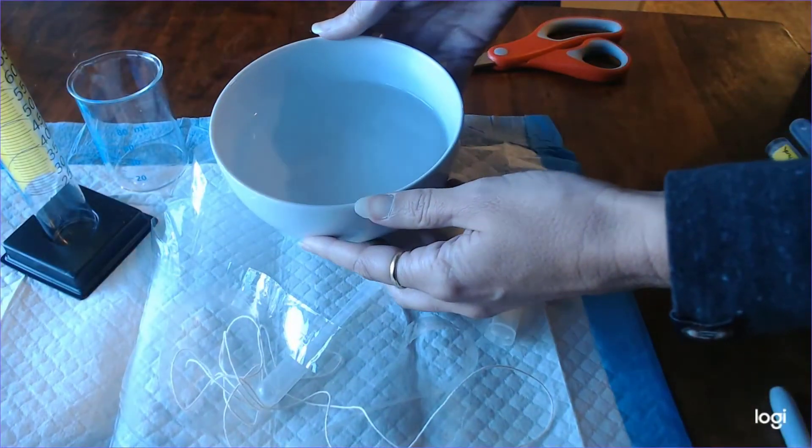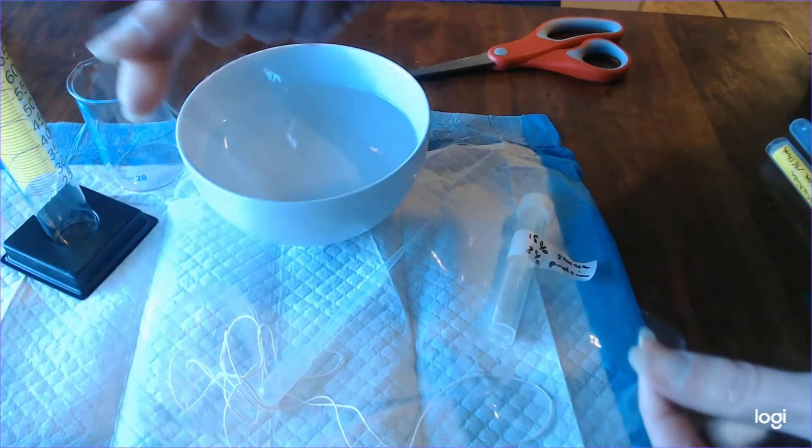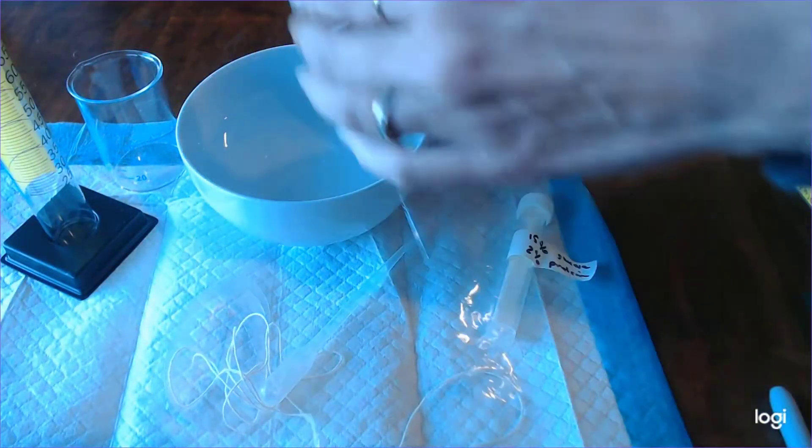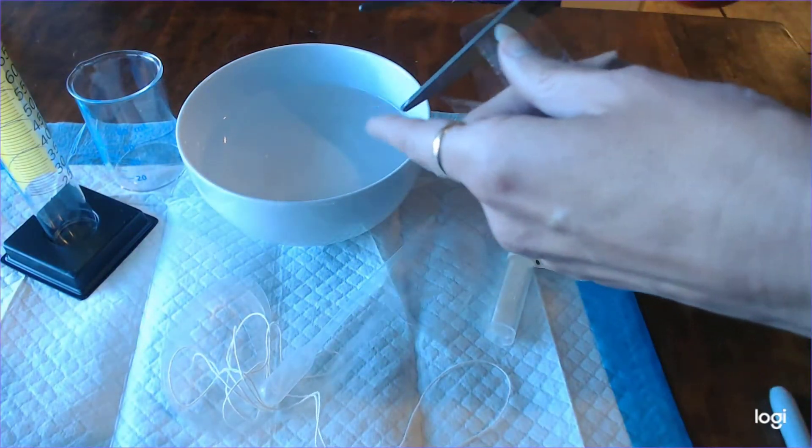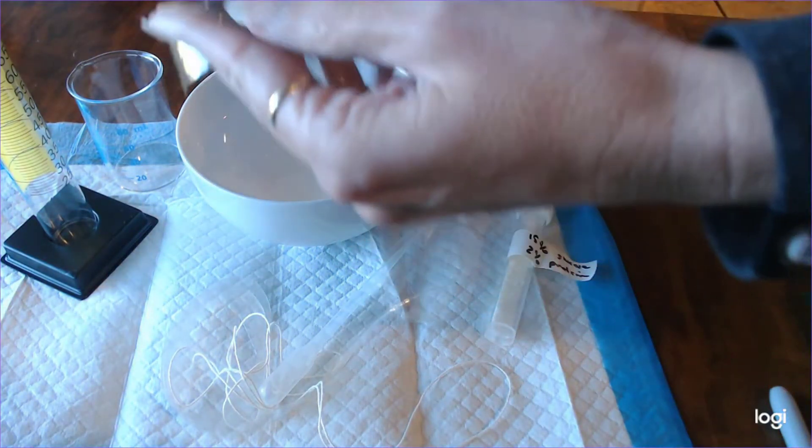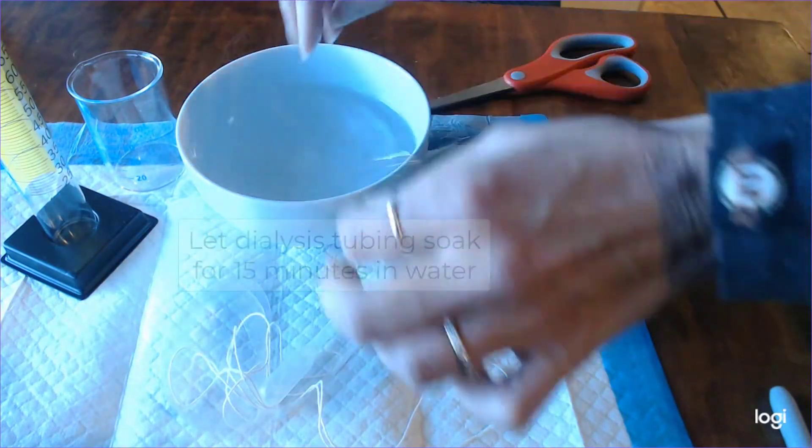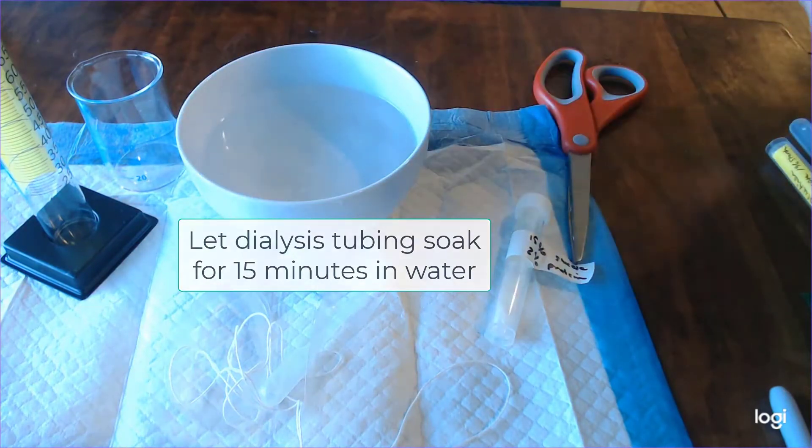The first thing to do is to soak our dialysis tubing. The tubing actually doesn't look like tubing when we first get it. It's dry and it looks like ribbon but you're going to go ahead and find this in your plastic bag labeled dialysis and you're going to cut off about a 6 to 8 inch strip and then you're going to soak it in a bowl of tap water and let it sit there for about 15 minutes.